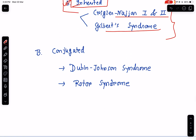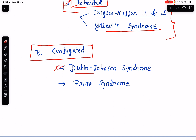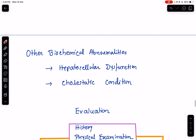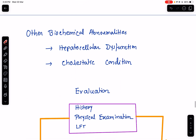Coming to the causes of isolated conjugated hyperbilirubinemia, where there is isolated rise of direct serum bilirubin, the causes are mainly two syndromes — Dubin-Johnson syndrome and Rotor syndrome. I will discuss about these syndromes in my upcoming classes. These are the causes of isolated hyperbilirubinemia.